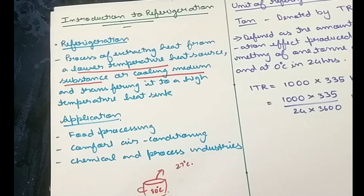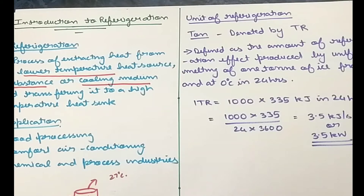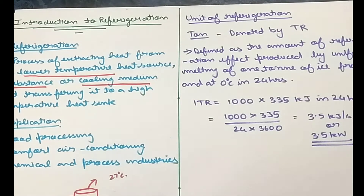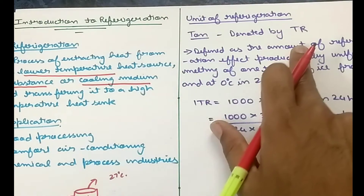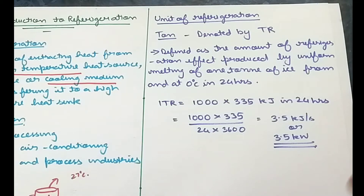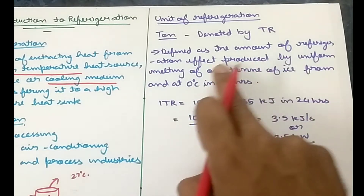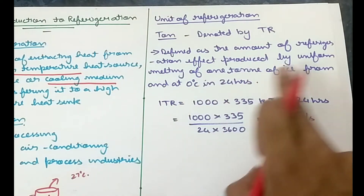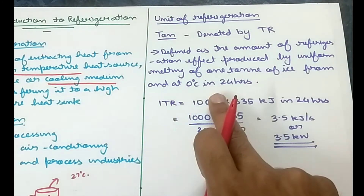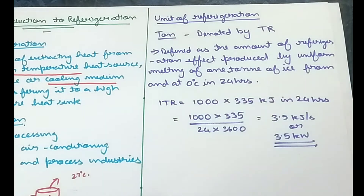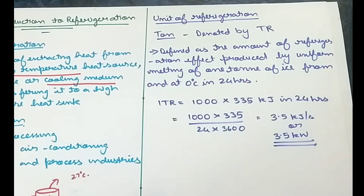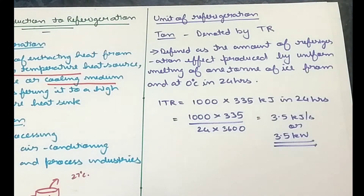Another important unit you will have to study before getting into depth on refrigeration is Ton of Refrigeration, denoted by TR. It is defined as the amount of refrigeration effect produced by uniform melting of one ton of ice from and at zero degrees Celsius.